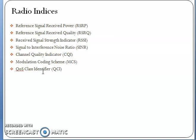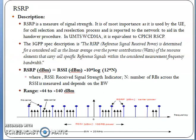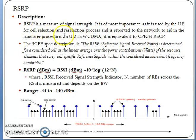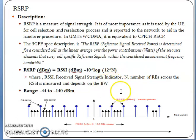RSRP is the Reference Signal Received Power. It measures signal strength and is the most important parameter used by cell selection, reselection, and handover processes. In 3G we use RSCP (Received Signal Code Power), and in 2G we use Rx levels. In 4G we have RSRP. The formula is: RSRP = RSSI − 10 log(12 × N), where N is the number of resource blocks. For 5 MHz bandwidth there are 25 RBs, and for 10 MHz bandwidth there are 50 RBs.